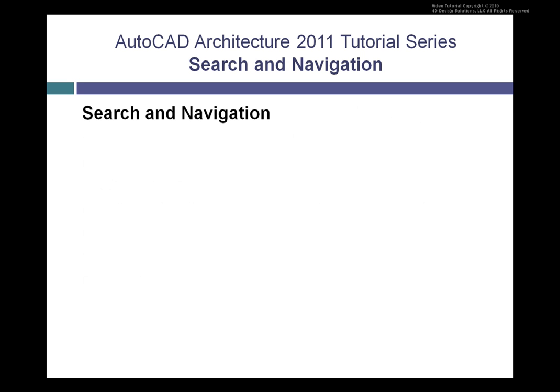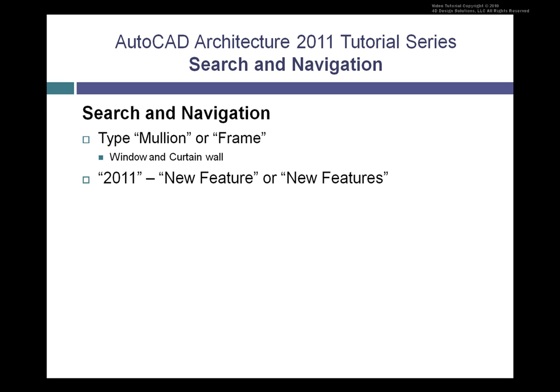We've added additional search capabilities. With our keyword search, for example, if you type in 'mullion' or 'frame', you will not only find lessons that refer to window, but also to curtain wall. And for those of you coming from the previous release of AutoCAD Architecture who simply want to know what the new features are, by typing in '2011', 'new feature', or 'new features', this will navigate you directly to a list of lessons with the new functionality that has been added for AutoCAD Architecture 2011.